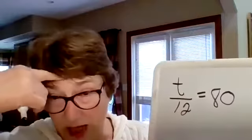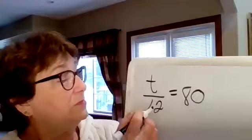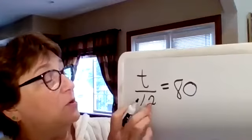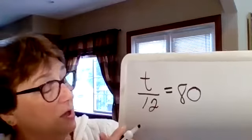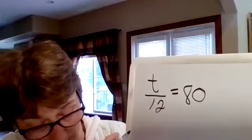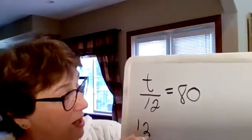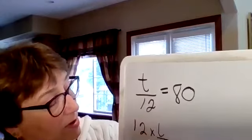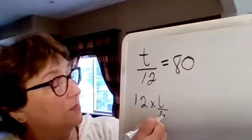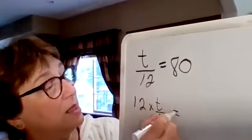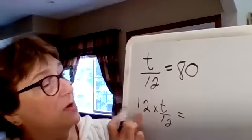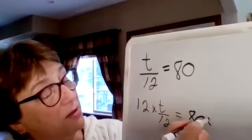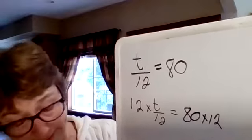So we have to use that knowledge to figure out what this is going to be. So if this says divide by 12, what we're going to do is multiply by 12. So we're going to say 12 times some number over 12 equals, and if we're multiplying times 12 over here, we have to do it on this side, equals 80 times 12.